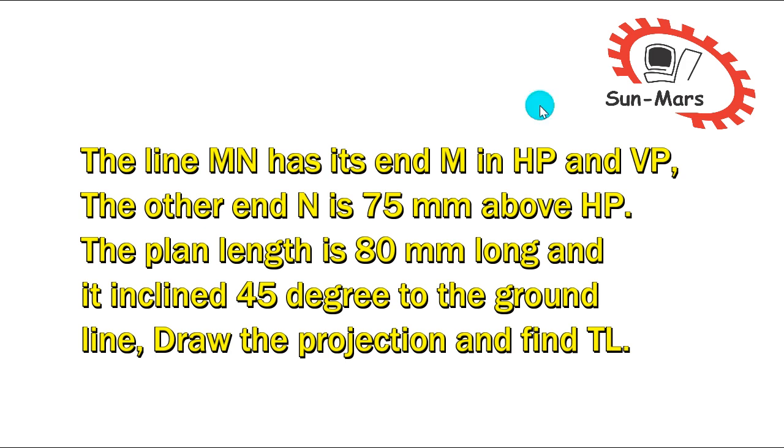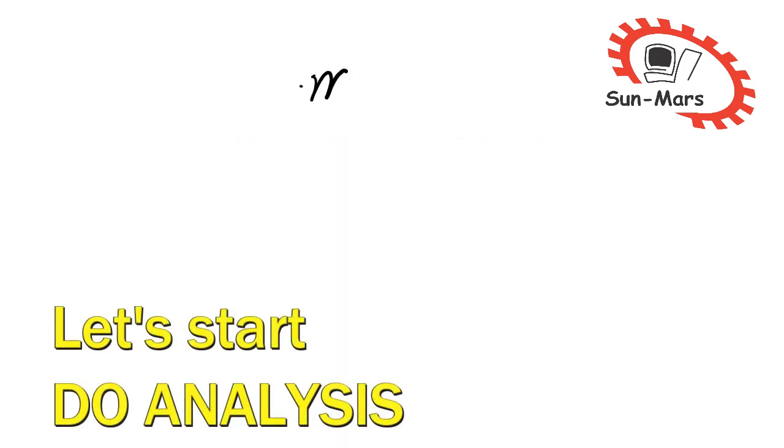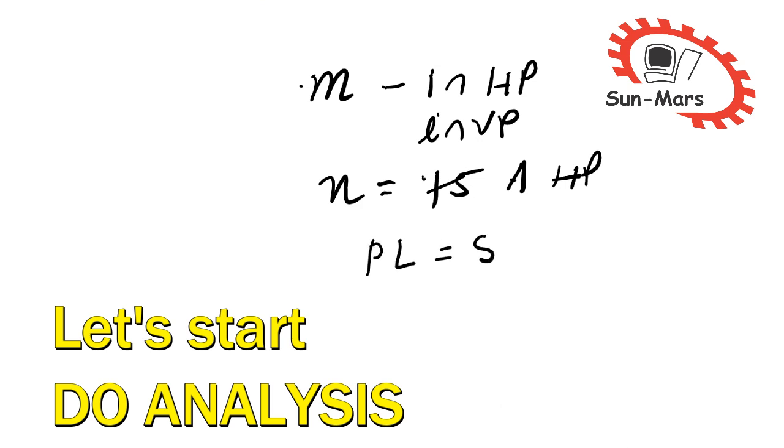Now friends, the data is given as: M is in HP and in VP, N is 75mm above HP, plan length is equal to 80mm, and beta is equal to 45 degrees.